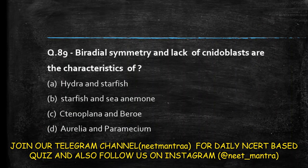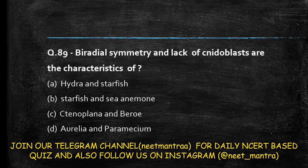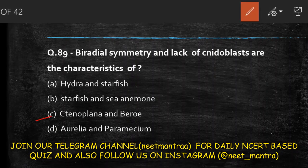Next question: bilateral symmetry, radial symmetry, and lack of nidoblasts are characteristic of — Hydra and Starfish; Starfish and Sea Anemone; Ctenophora and Volvox; Aurelia and Paramecium? Bilateral symmetry is found in Ctenophora, and Ctenophora lack nidoblast cells. The answer refers to Ctenophora.